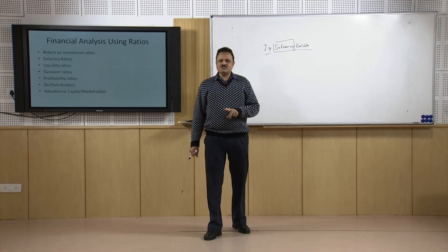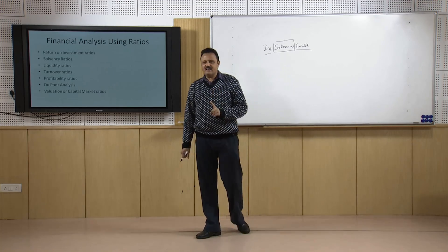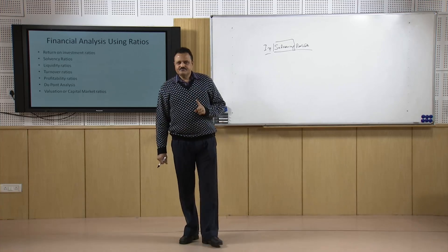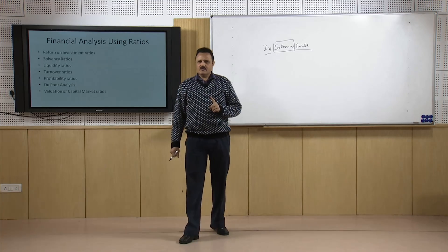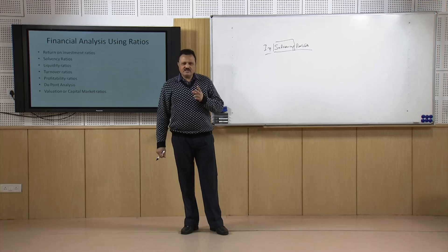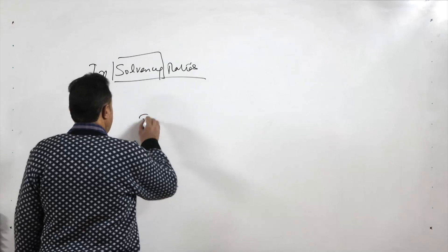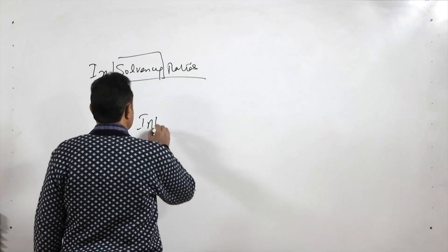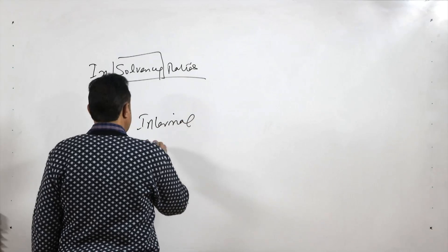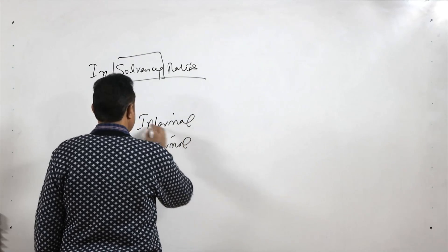If the borrowing capacity is not exhausted, it means the company is doing entire business from its own resources. There are two sources of doing business: internal sources of funds and external sources of funds.